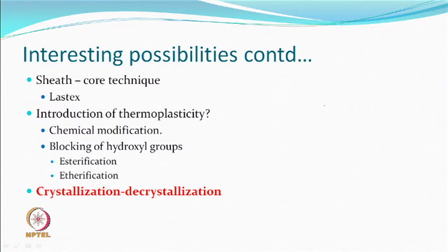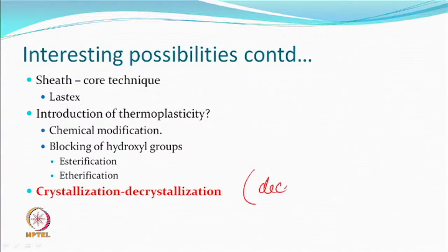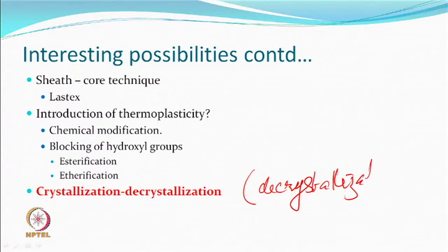Any spun yarn is much more bulky compared to a multifilament yarn — they were already at a bulk. Any further increase was welcomed, but more importantly, the stretch that comes from the process. As long as the setting is optimized, one could get these properties. Cyanoethylation of cotton could also introduce thermoplasticity. Another process tried was based on the principle of decrystallization and recrystallization.